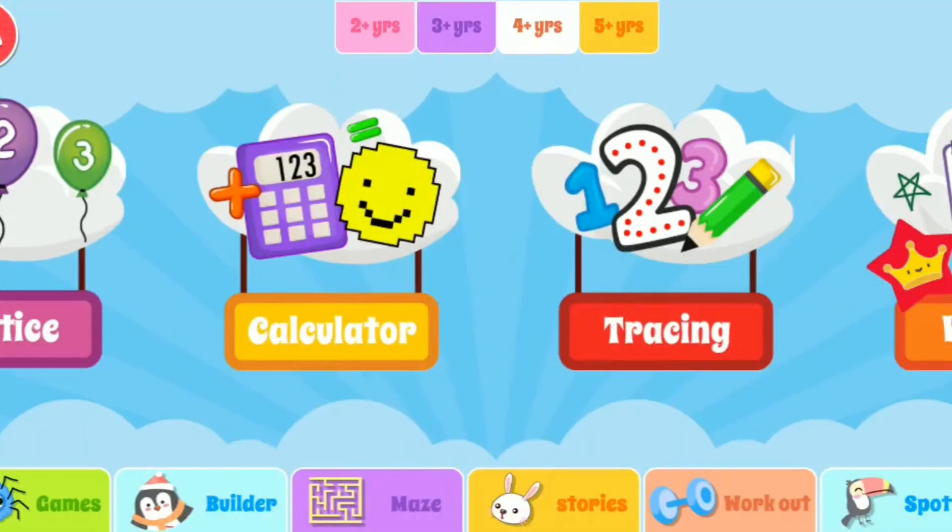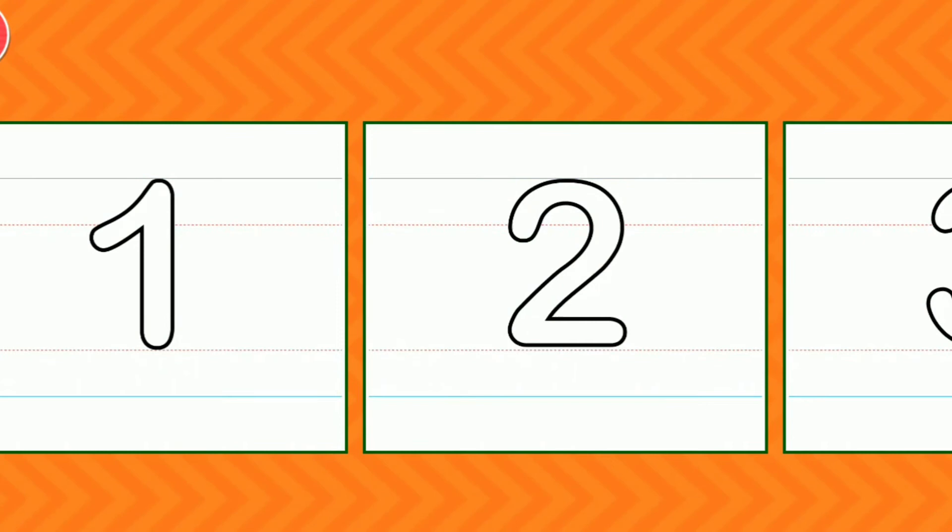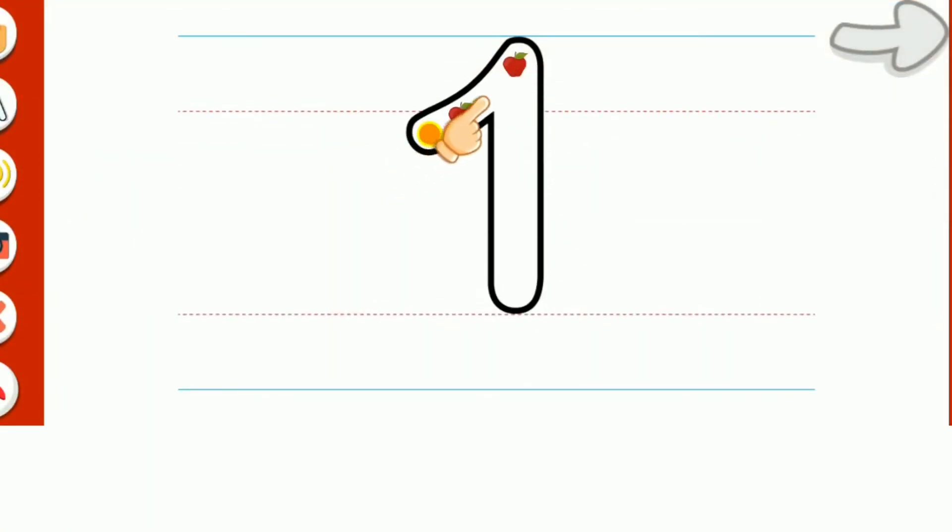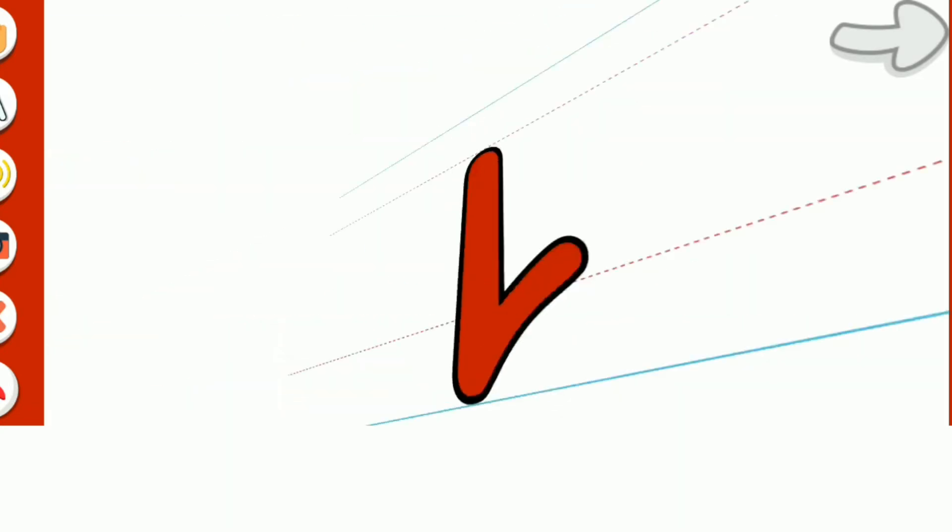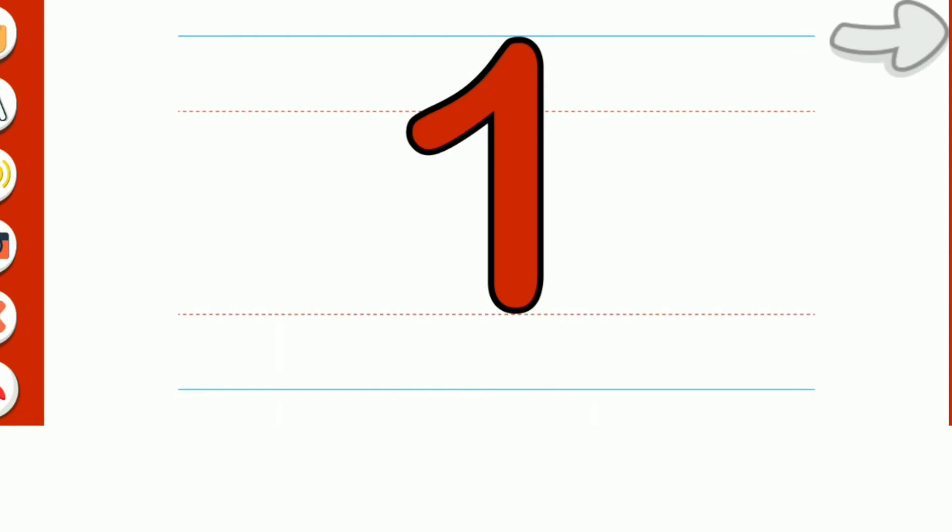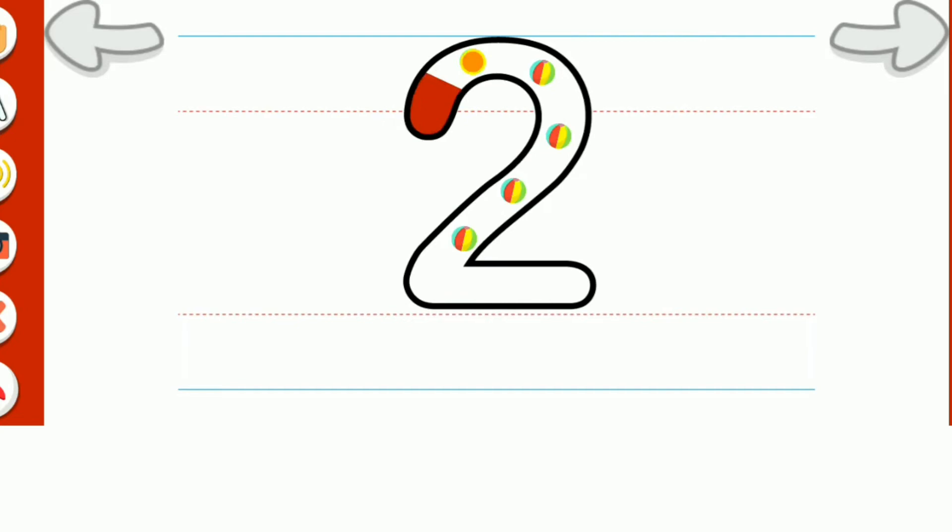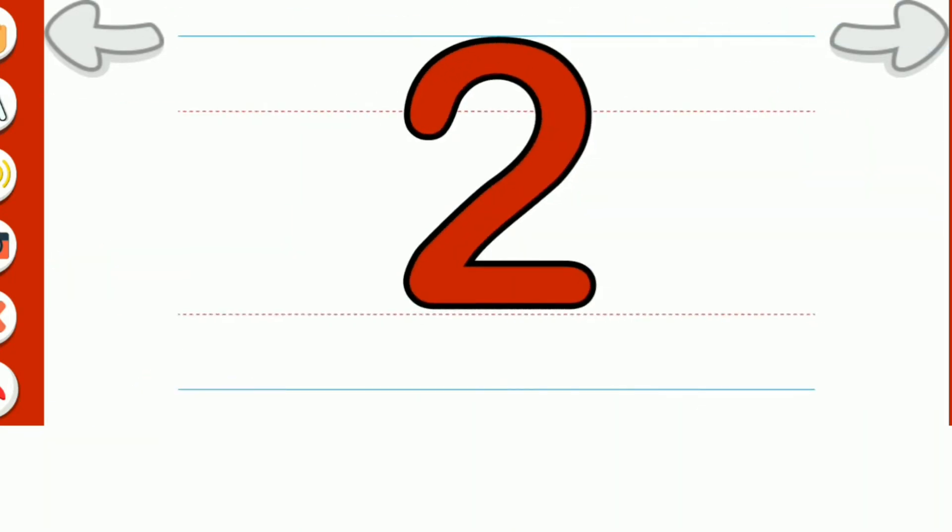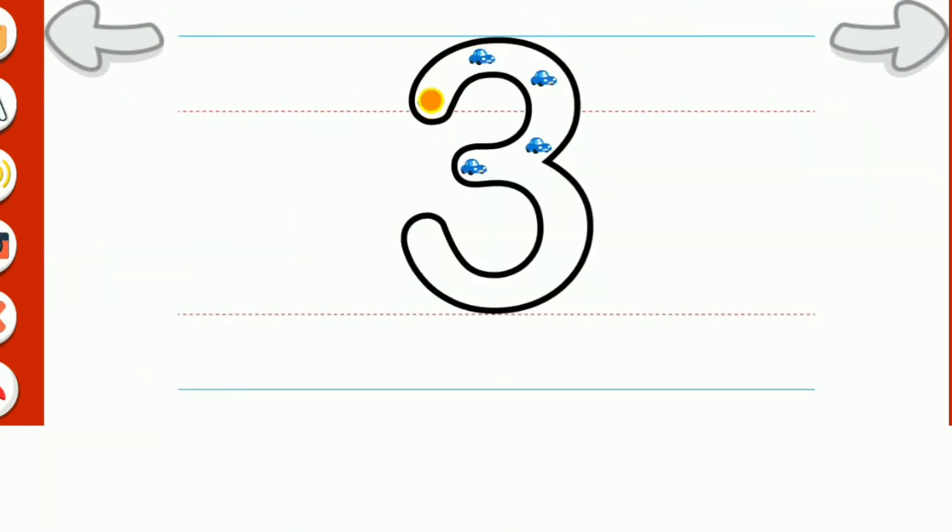Let's count, tracing. One, excellent. Two, excellent, three, intelligent.